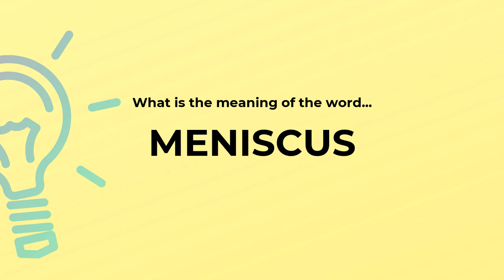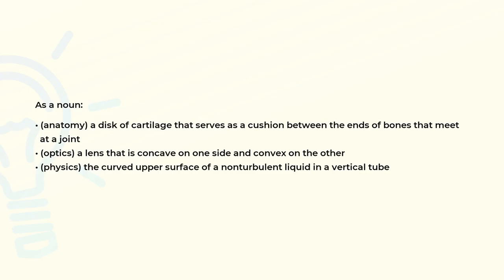What is the meaning of the word meniscus? As a noun: Anatomy, a disc of cartilage that serves as a cushion between the ends of bones that meet at a joint. Optics, a lens that is concave on one side and convex on the other.